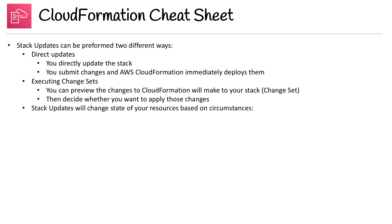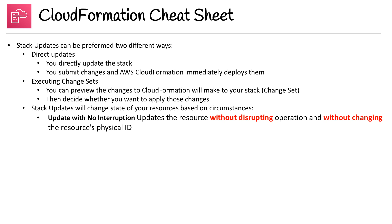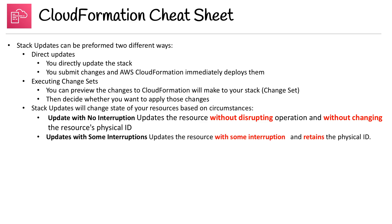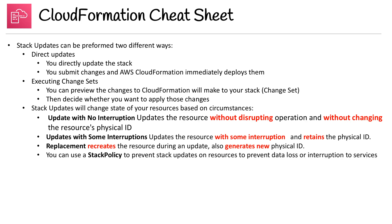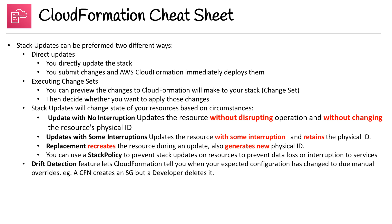Stack updates will change the state of resources based on circumstances. Update with No Interruption updates the resource without disrupting operation and without changing the resource's physical ID. Update with Some Interruption updates the resource with some interruption but retains the physical ID. Replacement recreates the resource during an update and generates a new physical ID. You can use a stack policy to prevent stack updates on resources to avoid data loss or interruption to services. Drift detection is a feature that lets CloudFormation tell you when your expected configuration has changed due to manual override.